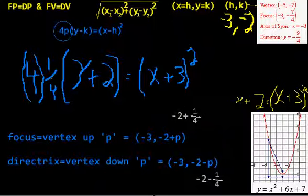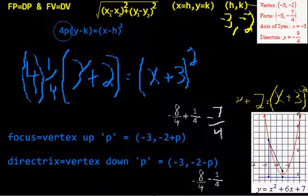Minus 8 fourths, which is minus 2. Minus 8 plus a fourth is minus 7 over 4. And minus 8 minus a fourth would be minus 9 over 4.